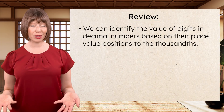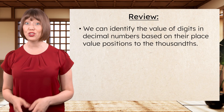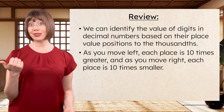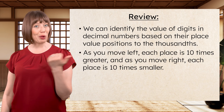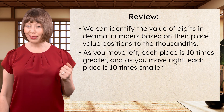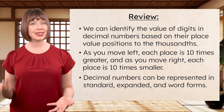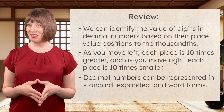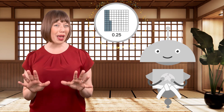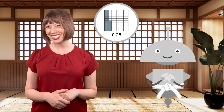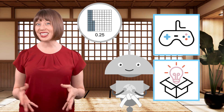So what have we learned today? We learned that the value of digits in decimal numbers is based on their place value positions to the thousandths. As you move left, each place is ten times greater, and as you move right, each place is ten times smaller. And we know that decimal numbers can be represented in standard, expanded, and word forms. You've earned the decimal place value badge, but your training isn't over just yet. Be sure to complete the practice questions and extension activities that go with this lesson. And remember Math Masters: in math, as in training, progress comes with patience and practice. I'll see you next time!